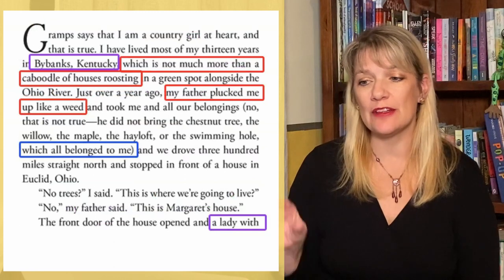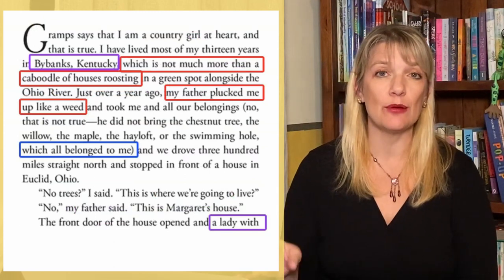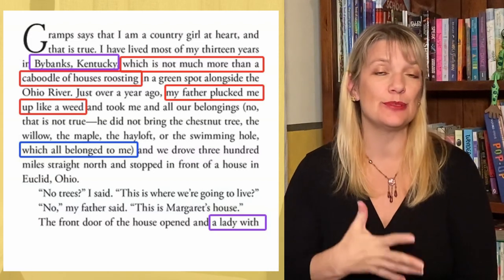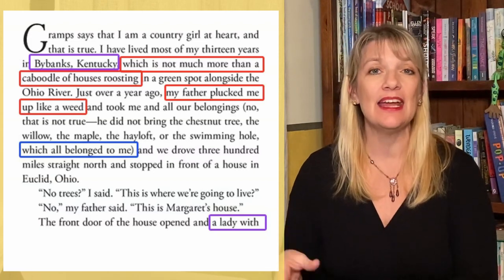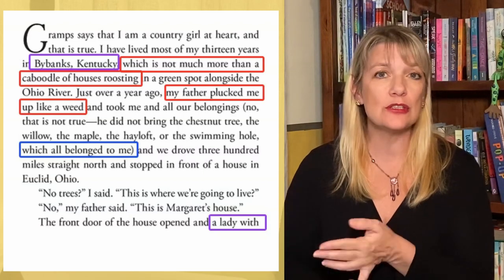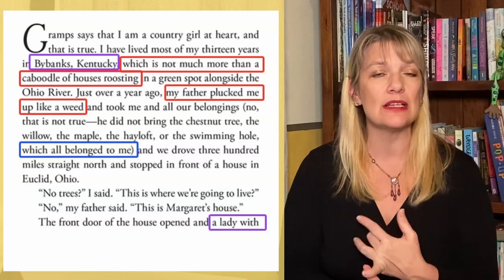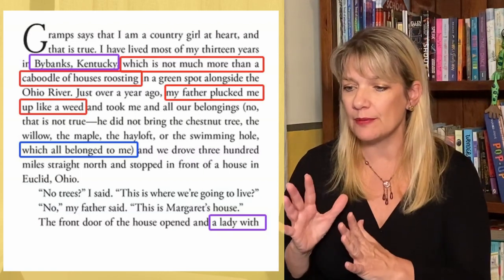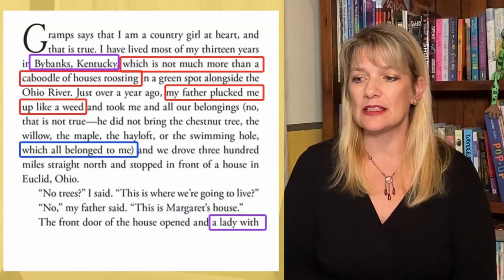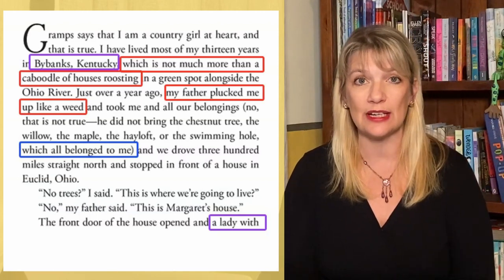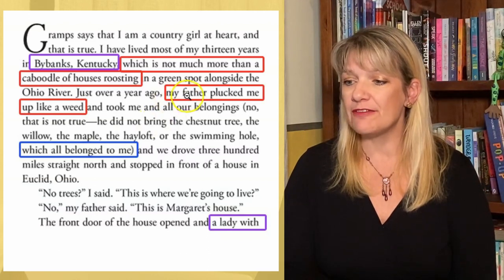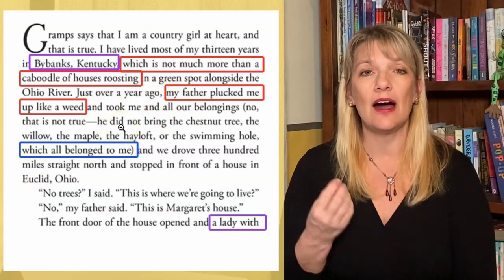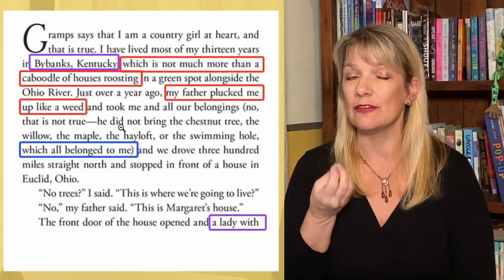The first thing I want to point out are the imagery, figurative language, simile, and metaphor. Remember, our imagery needs to be cohesive and make sense for the story we're telling, and Creech is a master at this. Walk Two Moons is about a girl who grows up in Bybanks, Kentucky — we know she's a country girl because she tells us so herself. Look at these examples: her town is described as 'not much more than a caboodle of houses roosting,' and then right after that, 'my father plucked me up like a weed.'